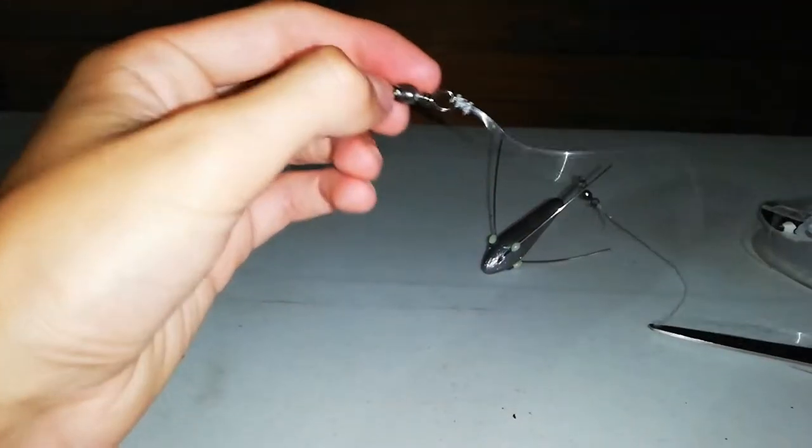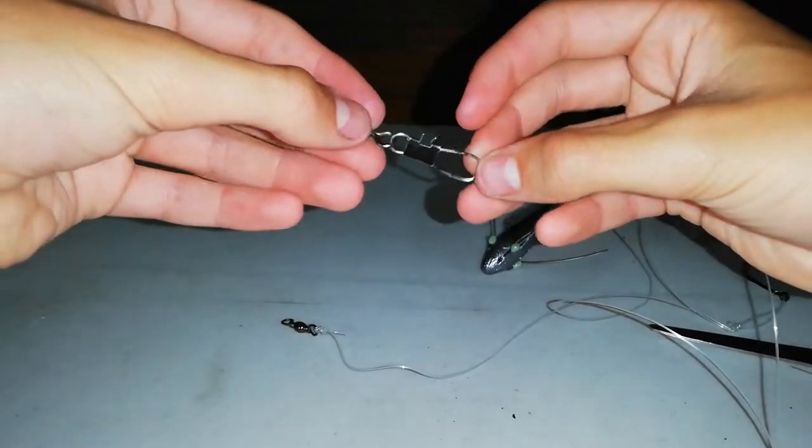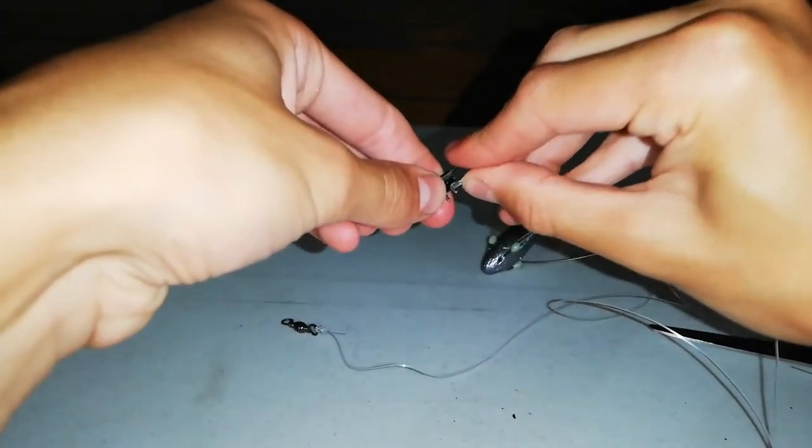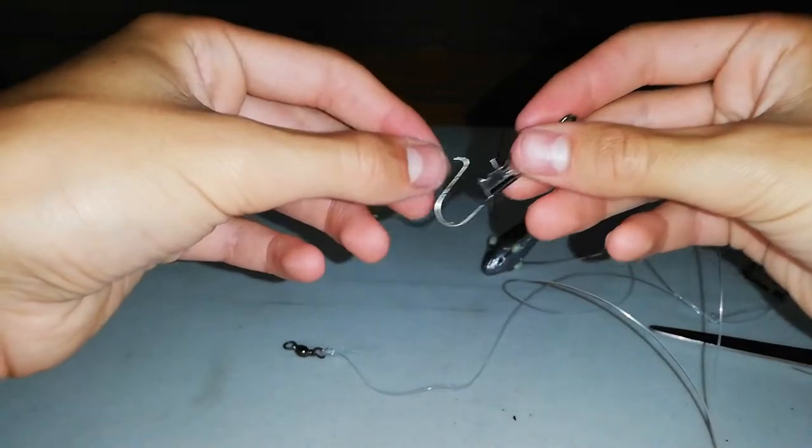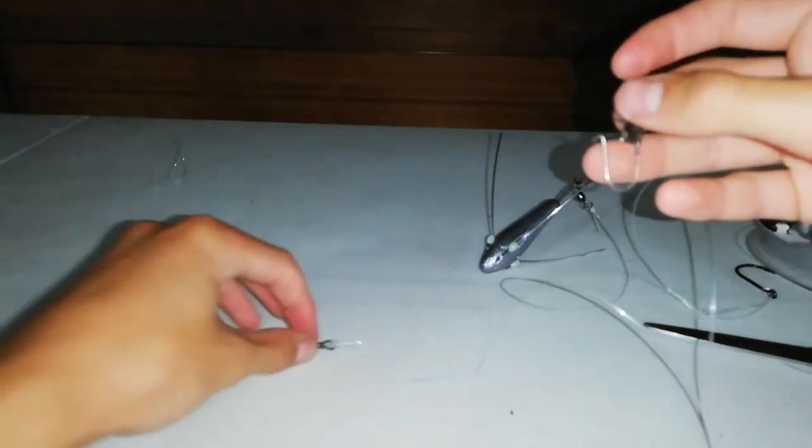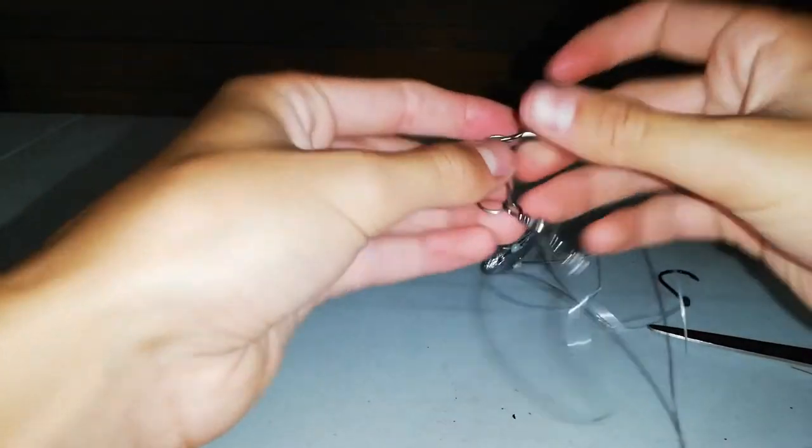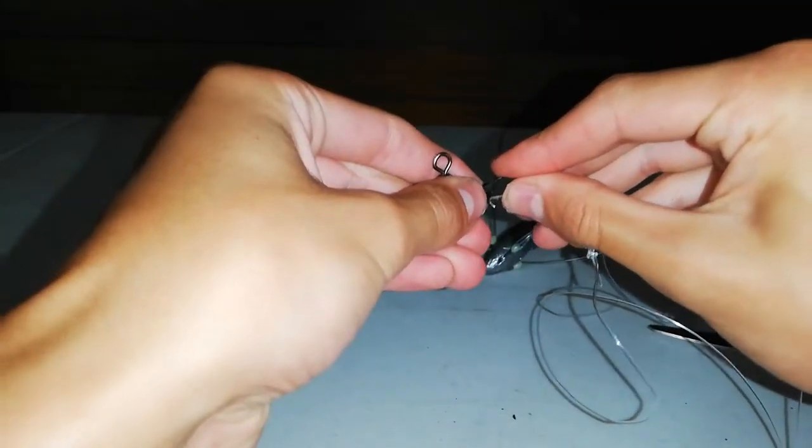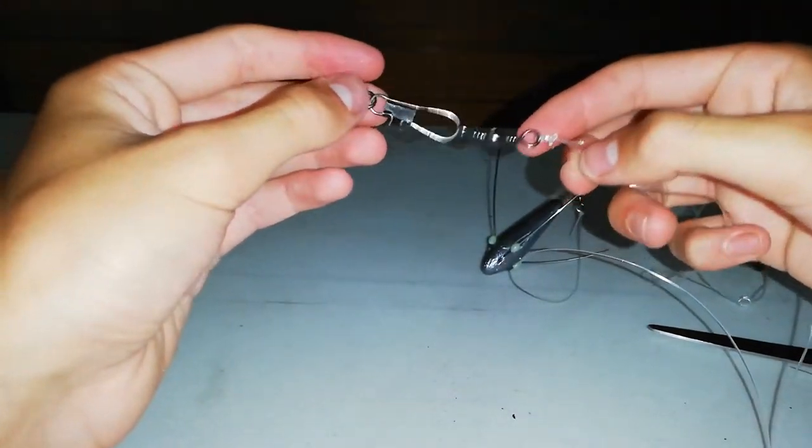So now what you're going to do, you want to attach a clip onto your main line and tie it on with the same knot that we did with this. So you get your clip from your main line and you're going to put it through there, and then make sure you clip it up or else you'll lose your sinker. And yeah, that's how you do it.